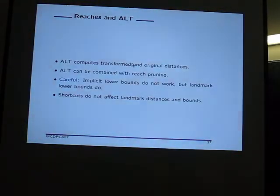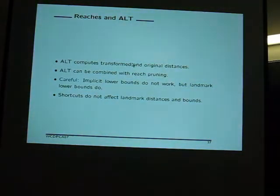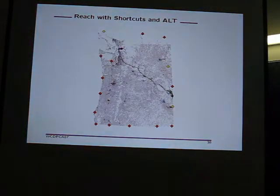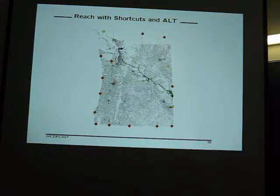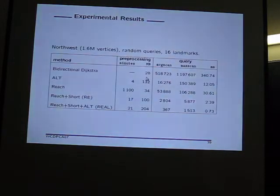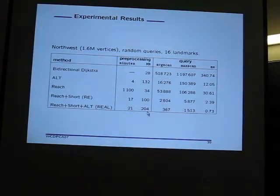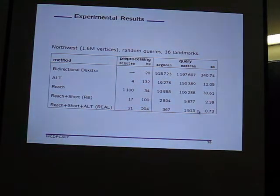Shortcuts correspond to original paths on the graph, so they don't affect landmark distances. The reach of a shortcut means you don't go back as much as before, so the graph becomes sparsified and directed. In terms of running times, preprocessing costs sum of two preprocessing times and you pay more in storage, but you get really fast queries and visit very few vertices.